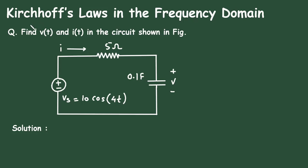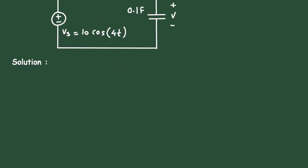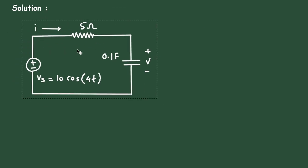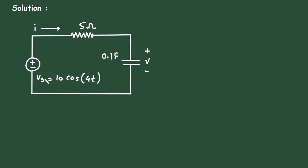In this video, we will see Kirchhoff's laws in the frequency domain. The question is: find V(t) and I(t) in the circuit shown in the figure. We have to find V(t) and I(t) in this circuit. First of all, the voltage is given as Vs = 10 cos(4t).